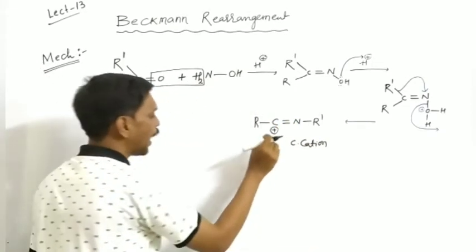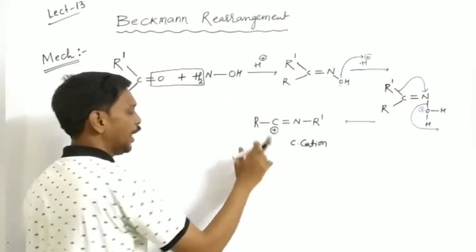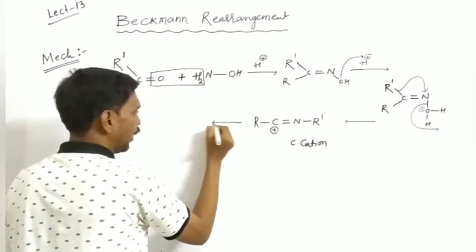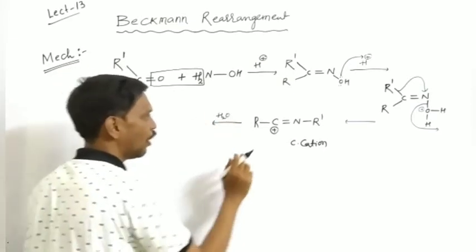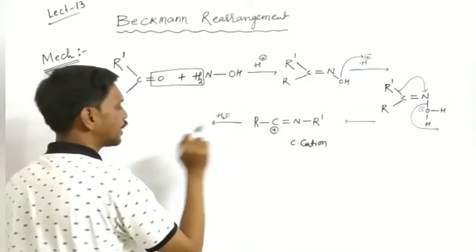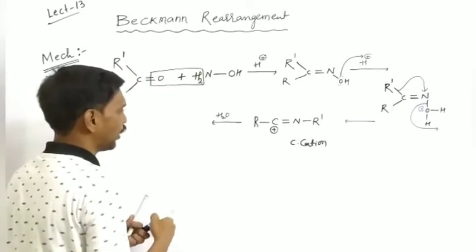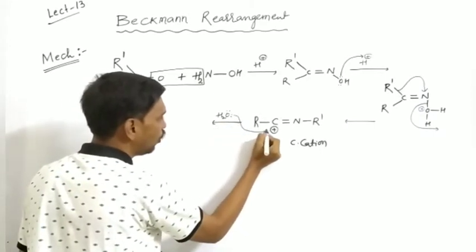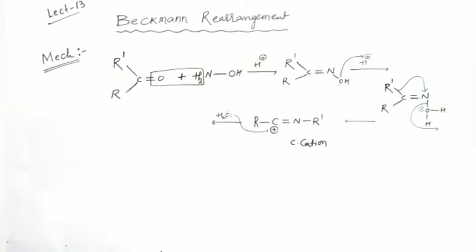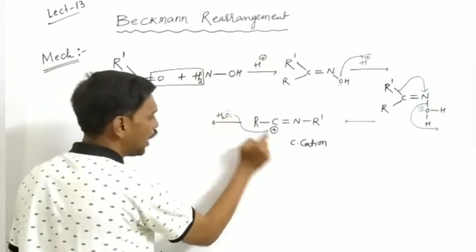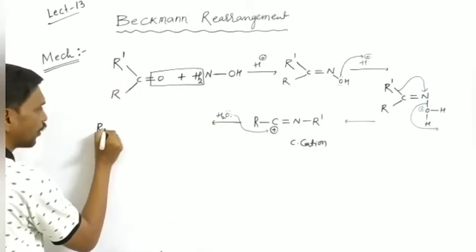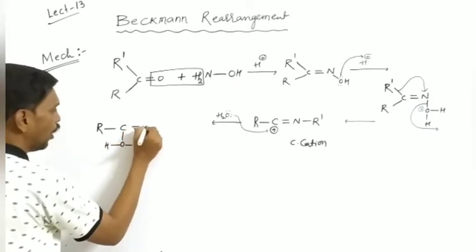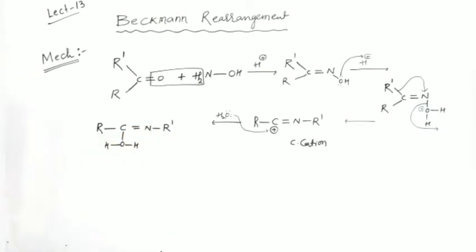Remember: if the carbocation is stable, we get a stable compound; if unstable, we get an unstable compound. The carbocation reacts again with the water molecule that was eliminated earlier. The lone pair electrons of water are donated to the electron-deficient carbon, forming a new C–O bond. We get R–C(OH)(H)=N–R', which carries an H+ and is an intermediate.